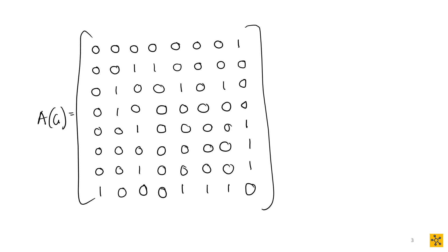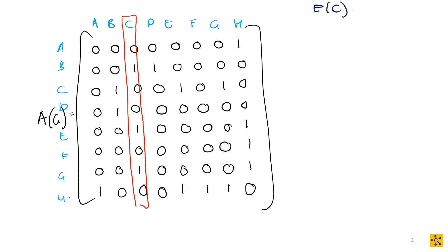From the adjacency matrix, remember every row and every column corresponds to a vertex: A, B, C, D, E, F, G, H. Next, I'm going to look for the eccentricity of C — that is, E(C) — the longest shortest path from C. So we activate C first and remove its row. Now we look for all adjacent vertices to C that haven't been activated: that's B, E, and G.